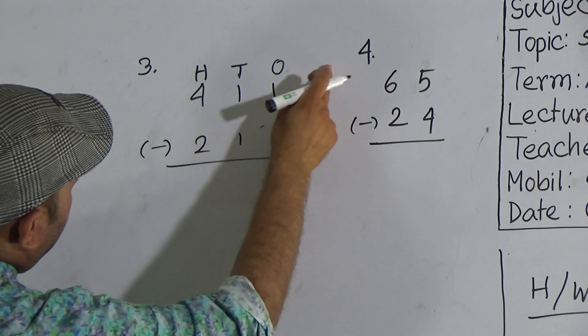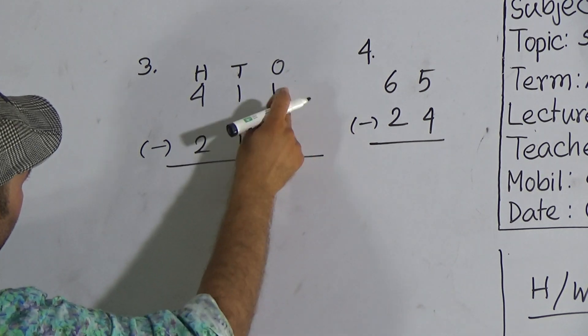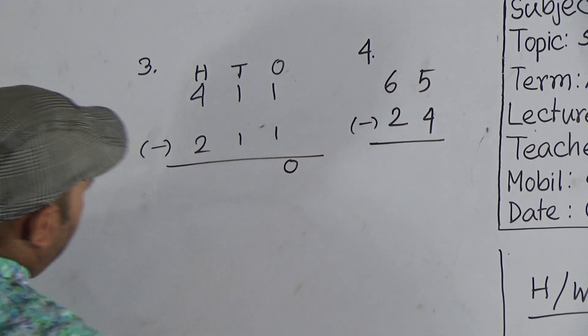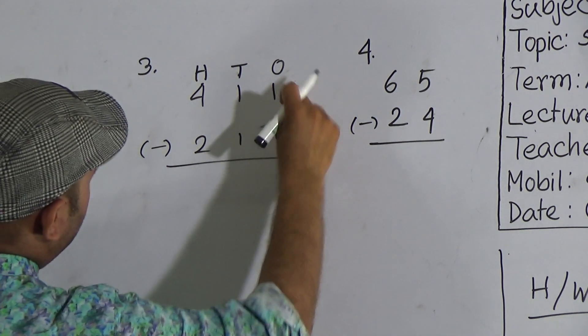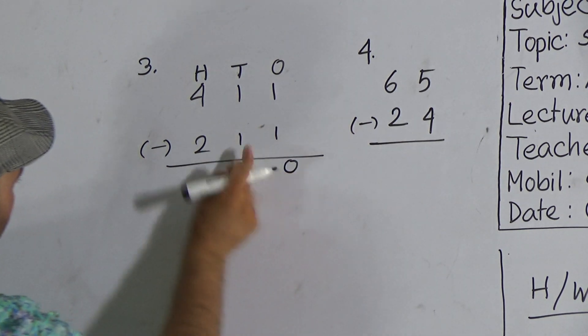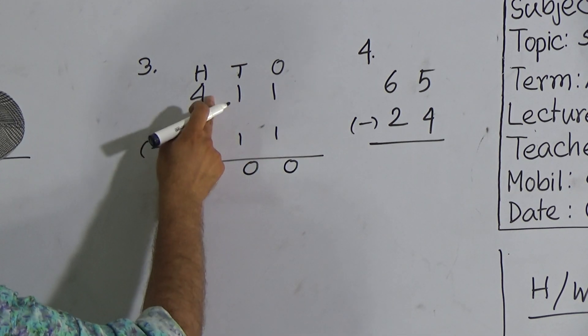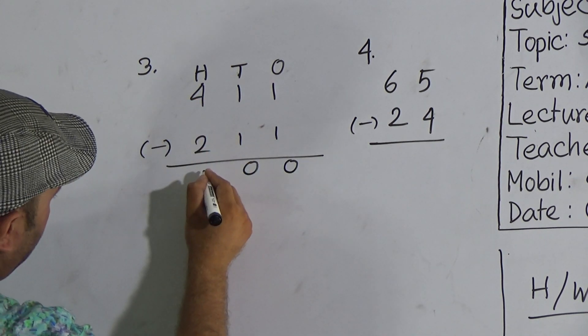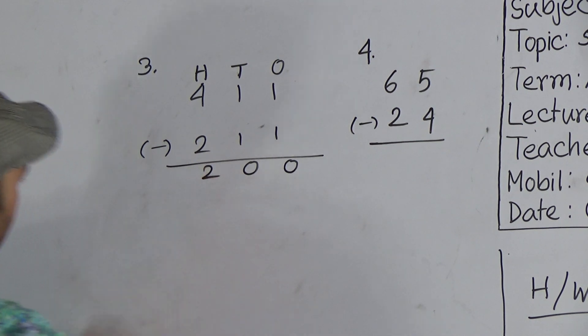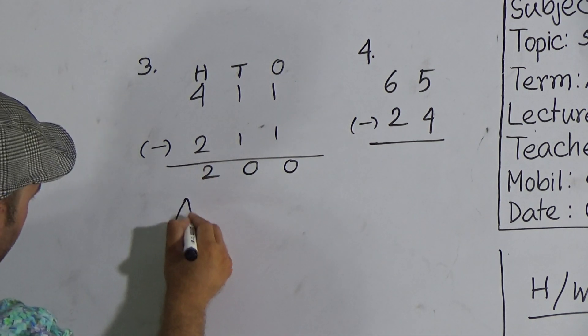Start from ones place: 1 from 1 is 0. After subtracting same number, always it will be 0. 1 from 1 again is 0. And the last one, 2 from 4 is 2. So the correct answer is 200.